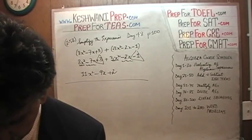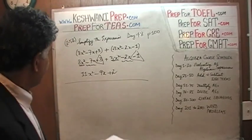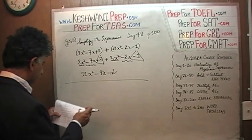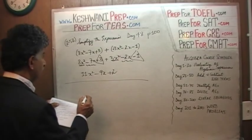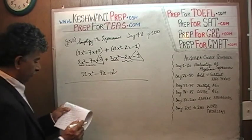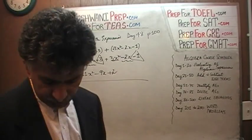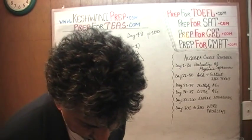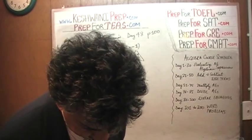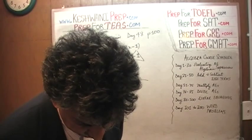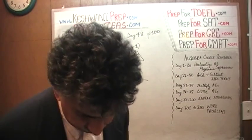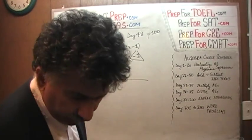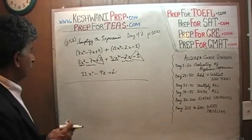Let's do one more. The one underneath it — that one has a negative sign. It's the exact same problem; they just switched the sign to negative. So we are going to do the next problem, 2.53. The only thing that changes is that this becomes negative.